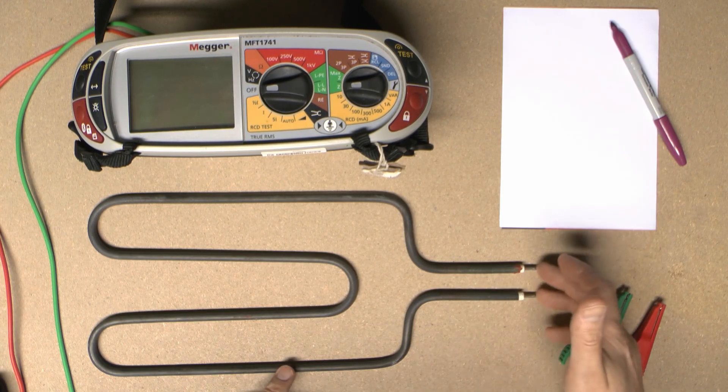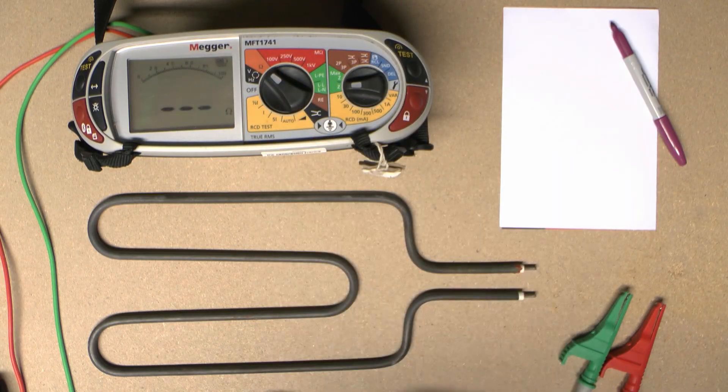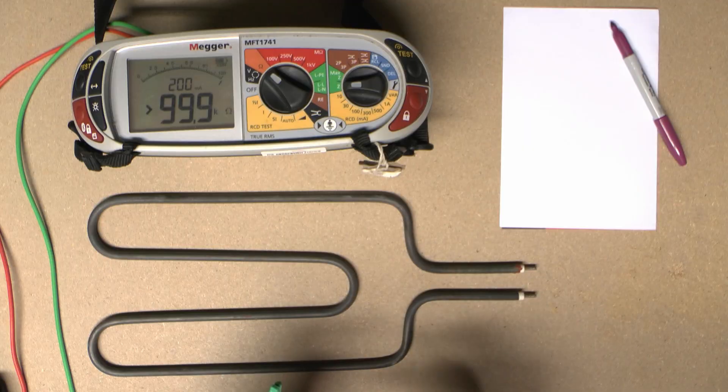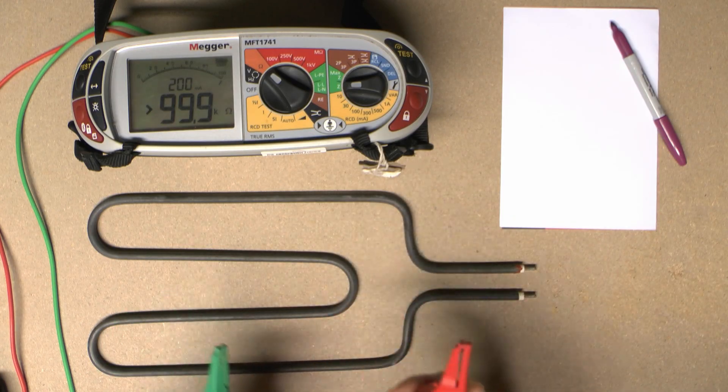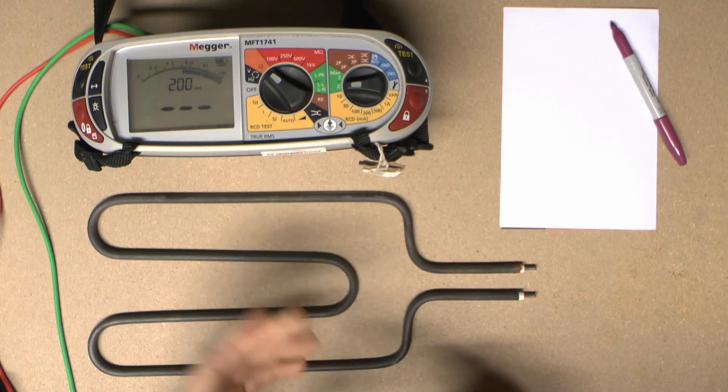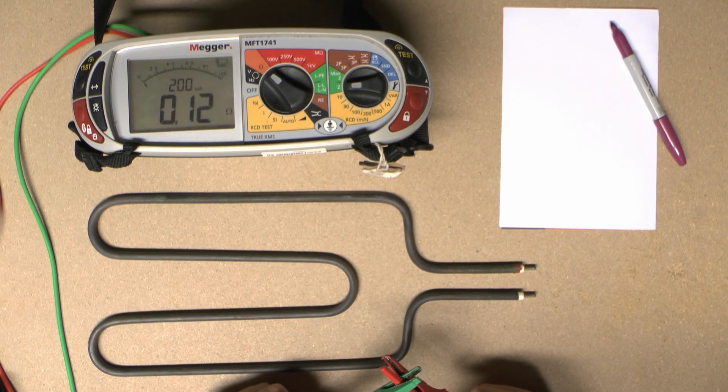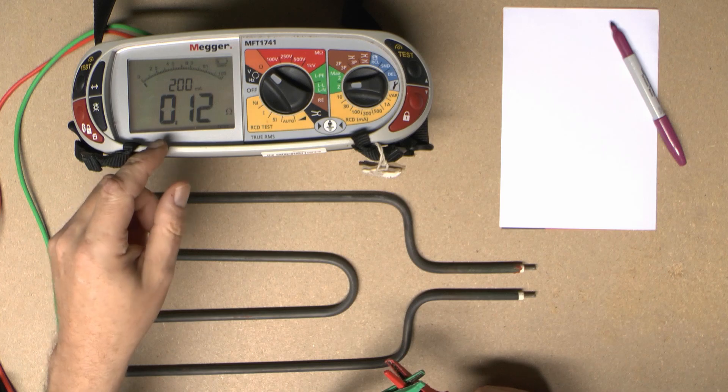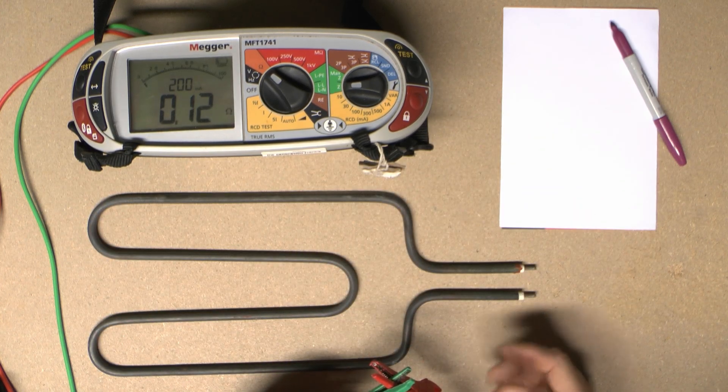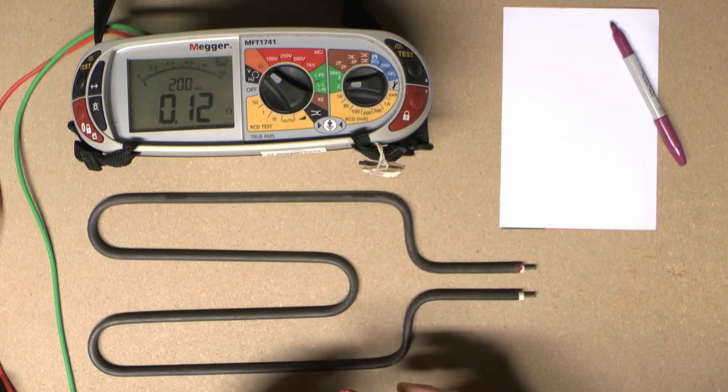For the first test, we're going to check resistance. Select resistance or ohms on whatever device you've got. It's a good idea to check between the two leads before testing to make sure they're connected correctly and not broken. If we connect those together, we should get pretty much zero, 0.12 ohms in this case. You can zero that out, and you would normally do that when testing a circuit. But with an element, because the resistance is large compared to that tiny amount, it doesn't particularly matter.